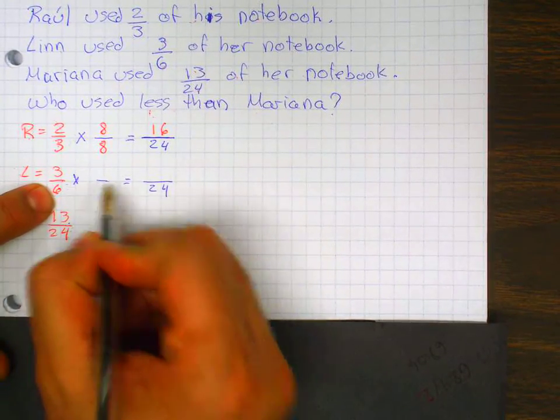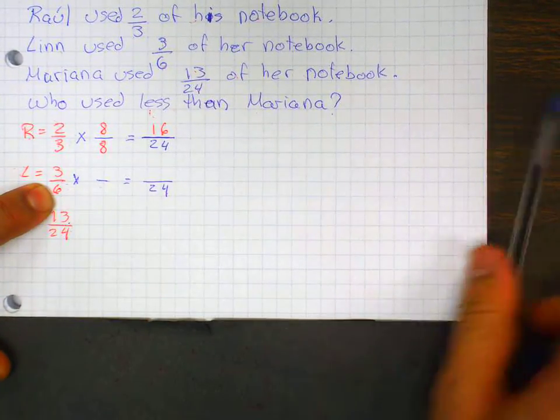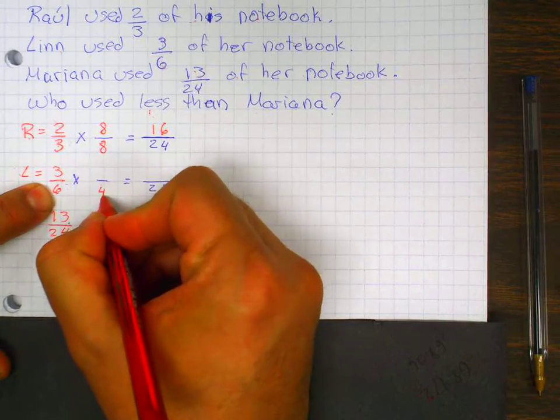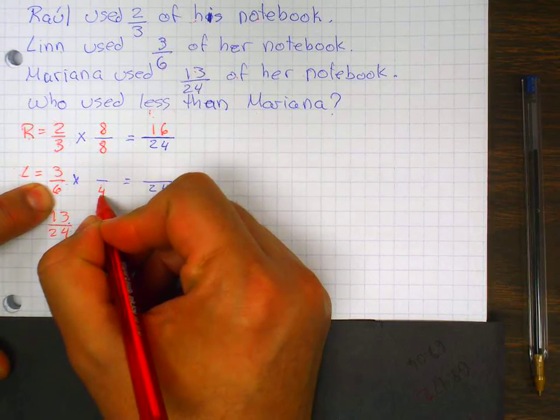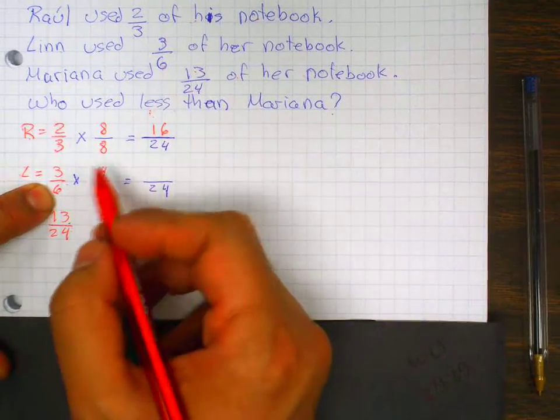Six times what number is twenty-four? Four. So six times four is twenty-four. And I need four in the numerator. Three times four is twelve.